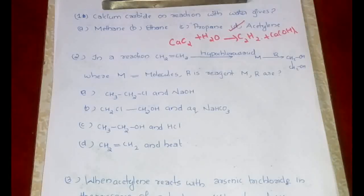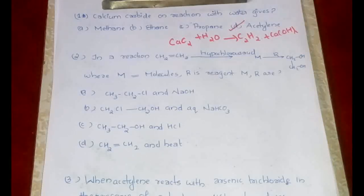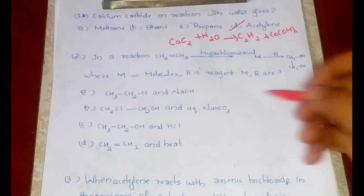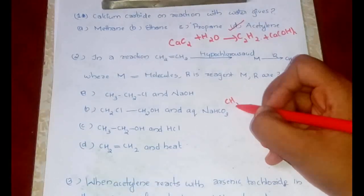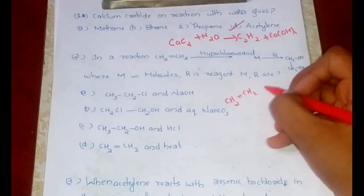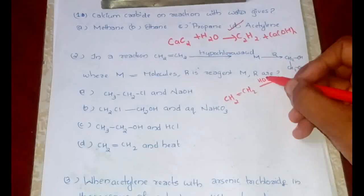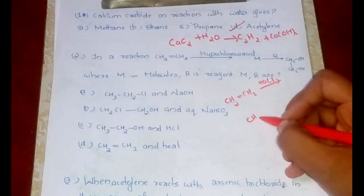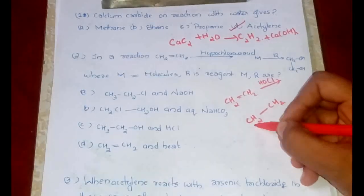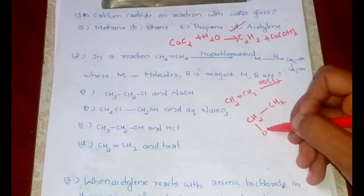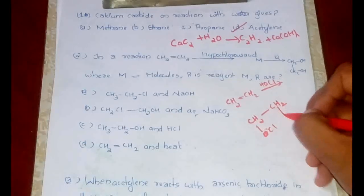Now the second question: if in a reaction CH2=CH2, that is ethene, is given, then reaction with hypochlorous acid will get a particular product M, and then we are using a reagent R and we are getting glycol. So we need to guess the reagents. First of all, let's see what happens when ethene reacts with HOCl. There will be OH and Cl, two different parts, and one will be getting attached to one of the carbons. Since this is symmetrical, we can assume the OH should be going to one carbon and Cl to the other.